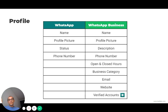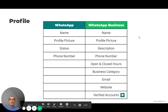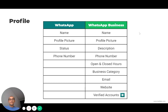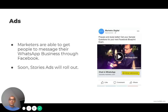Here's a small table where you can see that on personal WhatsApp you get a name, profile picture, status, and phone number. But when it comes to WhatsApp Business, you can get a ton more — like a description for your business, open and close hours and days, the category of your business, email, website, and a verified account so that they know they're talking to a business and not a personal account. From a profile perspective, you can get more information out there to your customers or users.